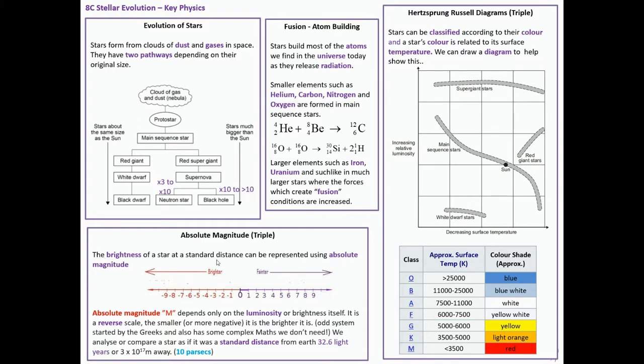The last thing here, it's a tricky one for triple students, is the brightness of a star at a standard distance can be represented using absolute magnitude. So there's this weird scale where actually when you go up in numbers, you're fainter. And if you go down in numbers in a negative, get more and more negative, you are brighter. Absolute magnitude M depends on the luminosity or the brightness of the star. And it's this reverse scale, as we said, and it's an odd system started by the Greeks and it has lots of complex maths. So we don't need for GCSE, you do it later. And what we do is analyse or compare a star as if it was a standard distance from the Earth. So at 32.6 light years away or 10 parsecs, or it could be 3 times 10^17 metres away. So we put a bit of standard distance and decide whether they're brighter or fainter than a reference point. A little bit weird, it's only worth a couple of marks though. There you go, that's stellar evolution.